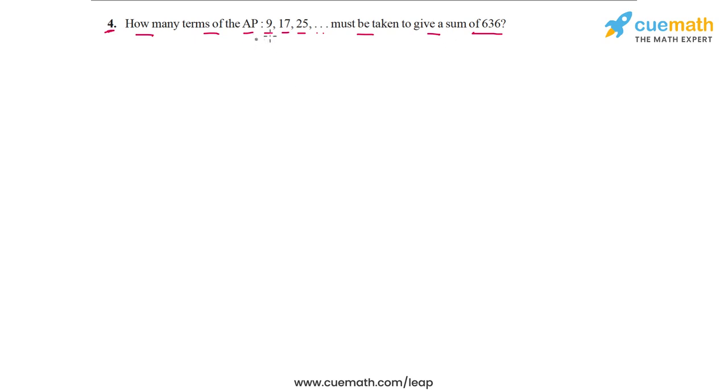Basically, as we take more terms of this AP the sum will increase. For example, the sum of the first two terms will be 9 plus 17 which is 26. The sum of the first three terms will be 9 plus 17 plus 25, which will be higher. So if you take more terms, the sum will become higher and higher. The question asks us to find how many terms should we take so that the sum becomes 636.